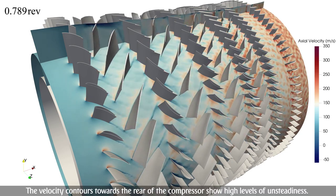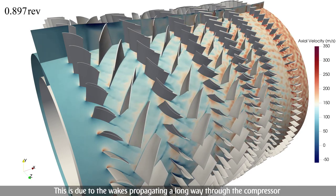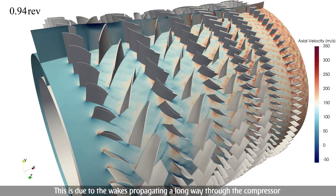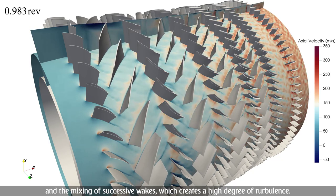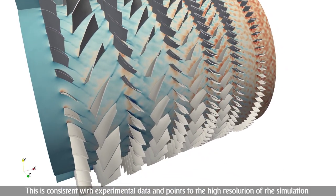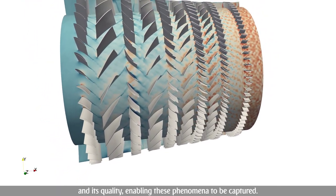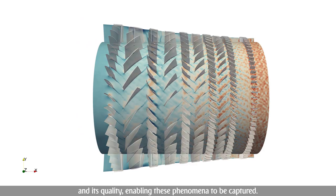The velocity contours towards the rear of the compressor show high levels of unsteadiness. This is due to the wakes propagating a long way through the compressor and the mixing of successive wakes, which creates a high degree of turbulence. This is consistent with experimental data and points to the high resolution of the simulation and its quality, enabling these phenomena to be captured.